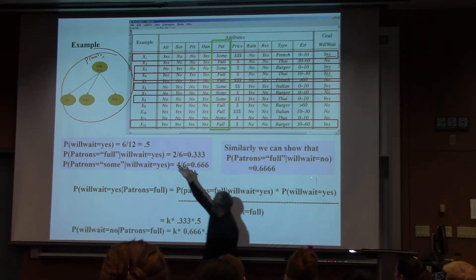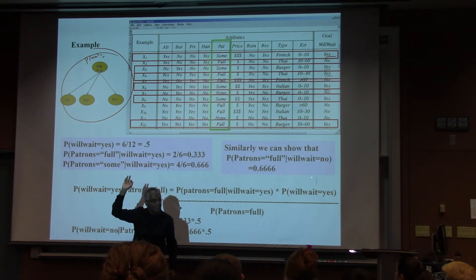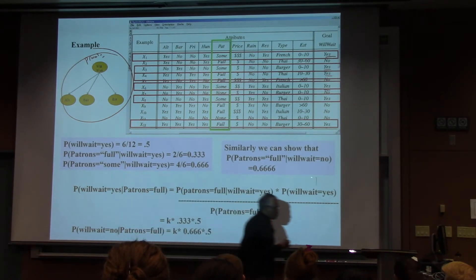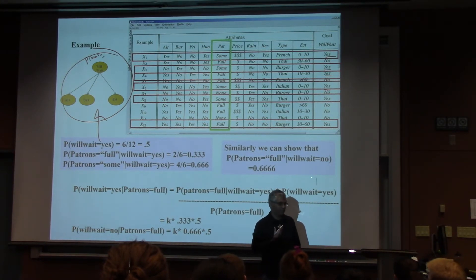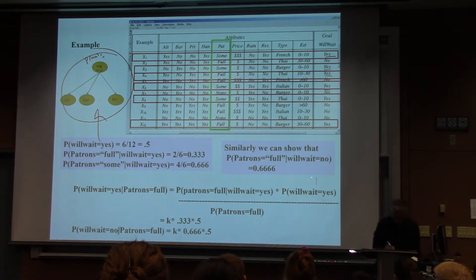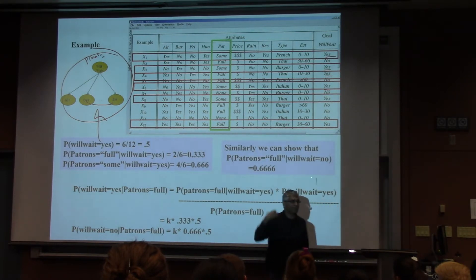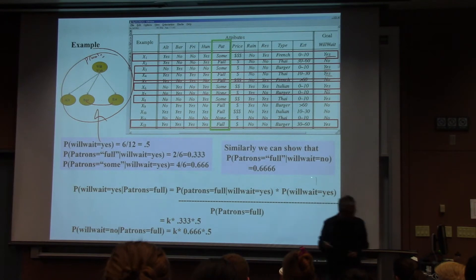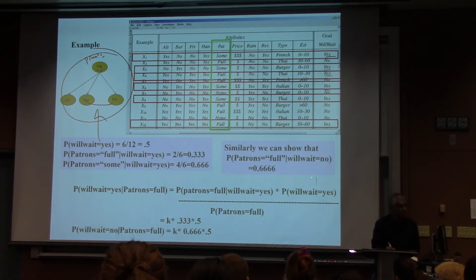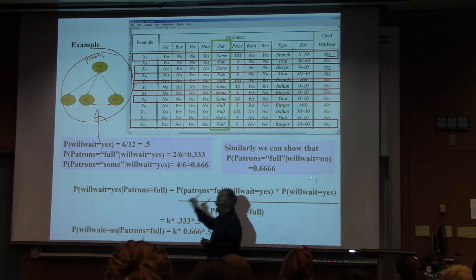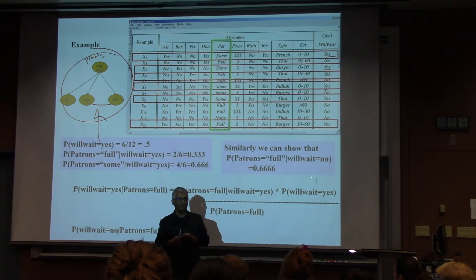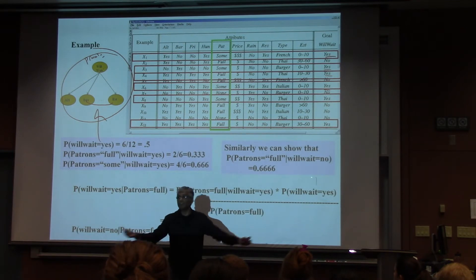Even though there is no reason to believe that is actually the way to write the distribution. When you assume this Bayes network structure, you make a huge number of independence assertions. For example, you are assuming that all attributes are independent of each other given the class value. If will-wait is given, one attribute is independent of another — that's the definition of conditional independence in Bayes networks. The real question is: do you actually believe that in the real world?